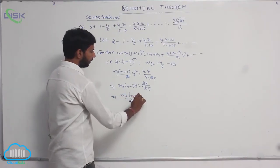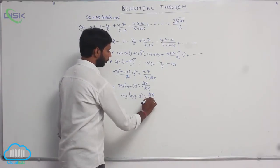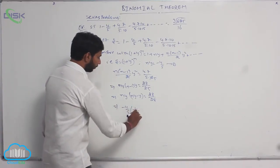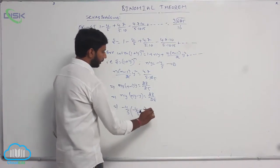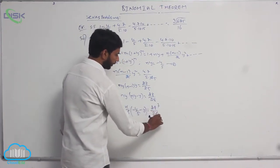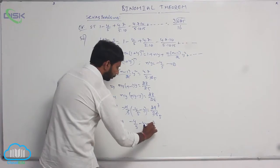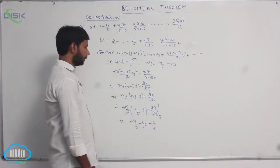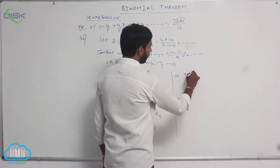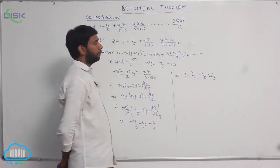Now, ny · (ny - y) = 28/25. Substituting ny = -4/5: (-4/5)(−4/5 − y) = 28/25. Here 4 cancels with 7 times and 5 cancels with 5 times, giving -4/5 - y = -7/5. Therefore y = 7/5 - 4/5 = 3/5.